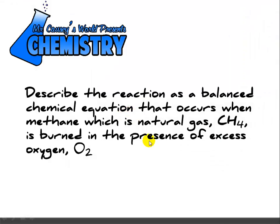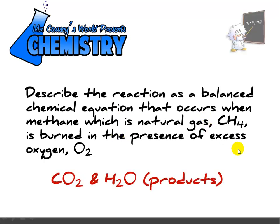Describe the reaction as a balanced chemical equation that occurs when methane, which is natural gas CH4, is burned in the presence of excess oxygen, O2. What we want to first realize is that this is a combustion reaction. And in a combustion reaction we always have two products: carbon dioxide and water. These are our products in a combustion reaction.